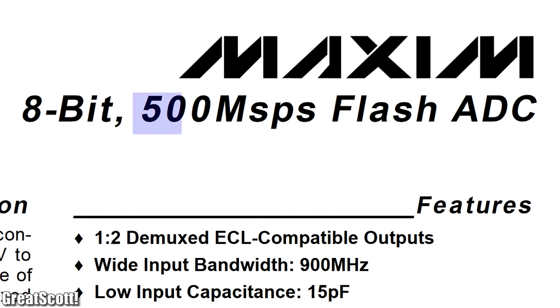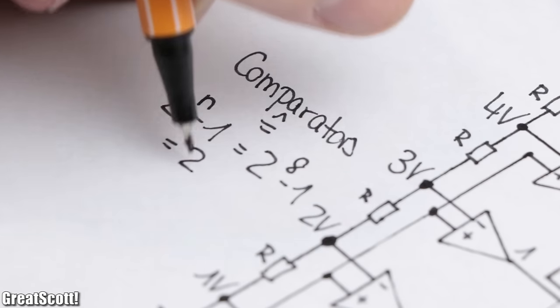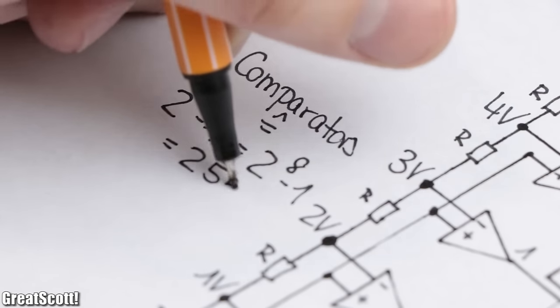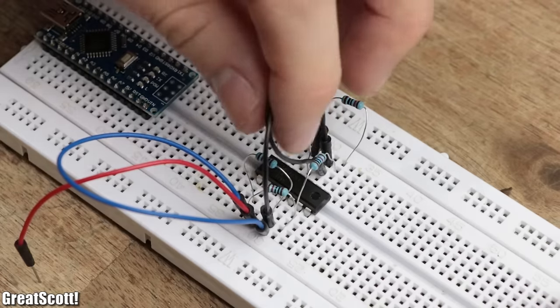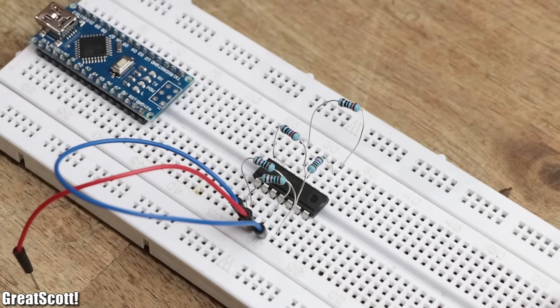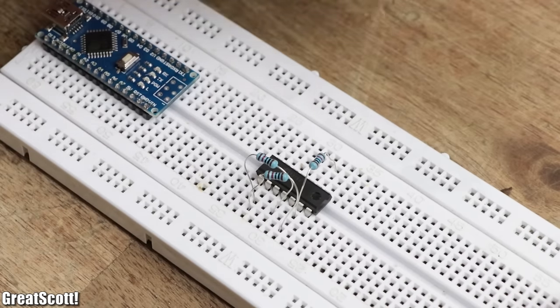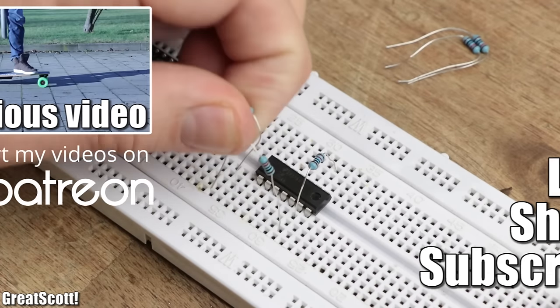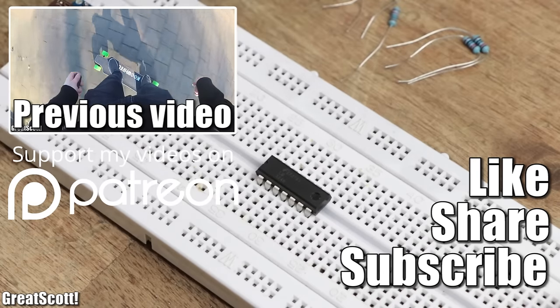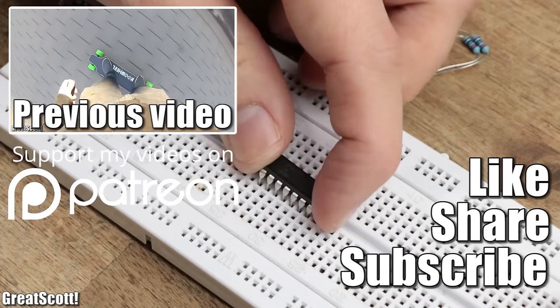This means flash ADCs are ridiculously fast, but usually have a low resolution, since they require 255 comparators for just an 8-bit resolution. And with that being said, you already know quite a lot about ADCs. I hope you liked this video. If so, don't forget to like, share, and subscribe. Stay creative and I will see you next time.